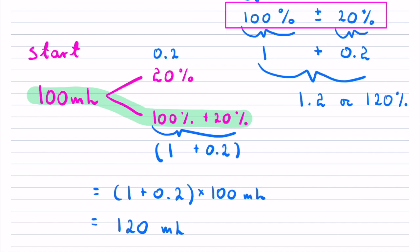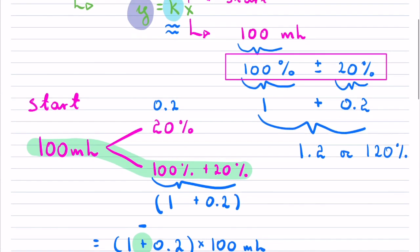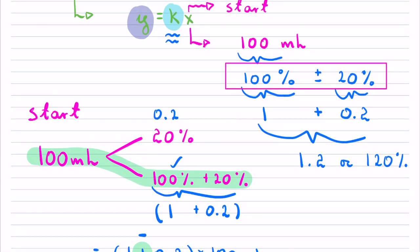Now, if it's a decrease by 20%, then the only difference would be that your plus would simply change to a minus. And indeed, if you take 100% minus 20%, you'll just be left with 80%. And if you would have multiplied, you would have got 80 milliliters left. So if you're looking at this scaling factor of k, it is nothing else but simply 100% plus or minus some percentage point.